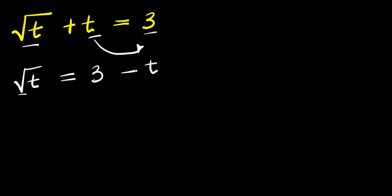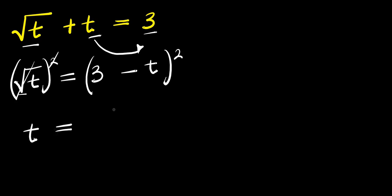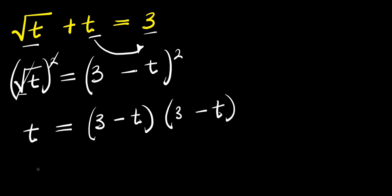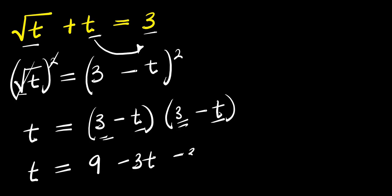Right now we need to eliminate this square root. We can take the square of both parts of this equation. So this gives us t = (3 - t)(3 - t). Let's expand this: 3 times 3 is 9, then 3 times -t is -3t, then -t times 3 is -3t, and -t times -t is +t².